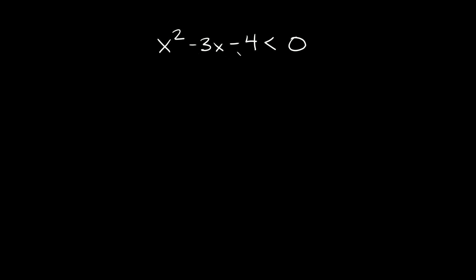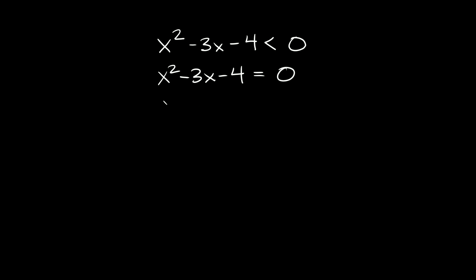So here we have x squared minus 3x minus 4 is less than 0. The first thing we want to do is just replace our inequality with an equal sign — that's always step one. So we're going to say x squared minus 3x minus 4 is equal to 0. Now we just need to solve for x — that's step two.